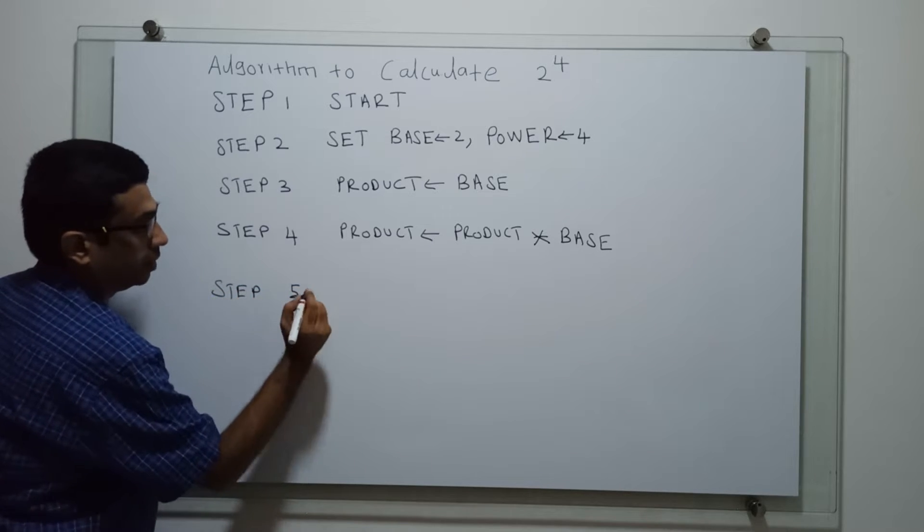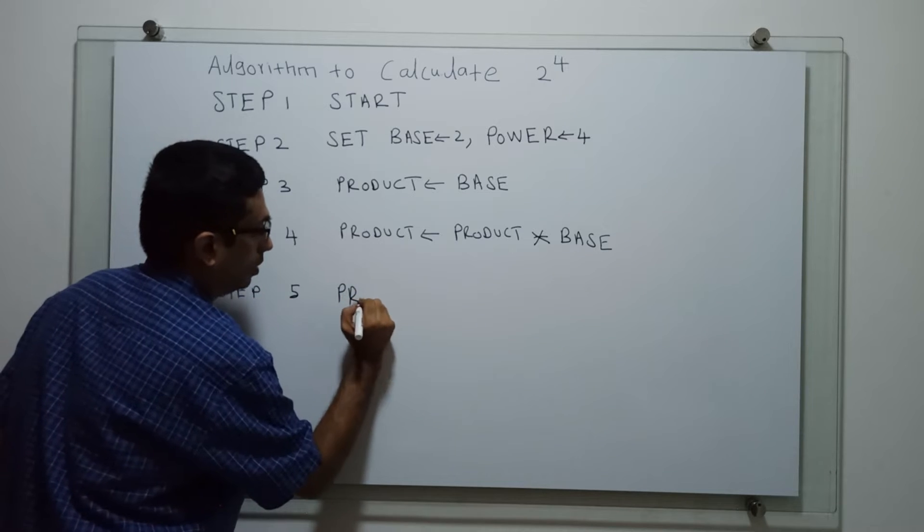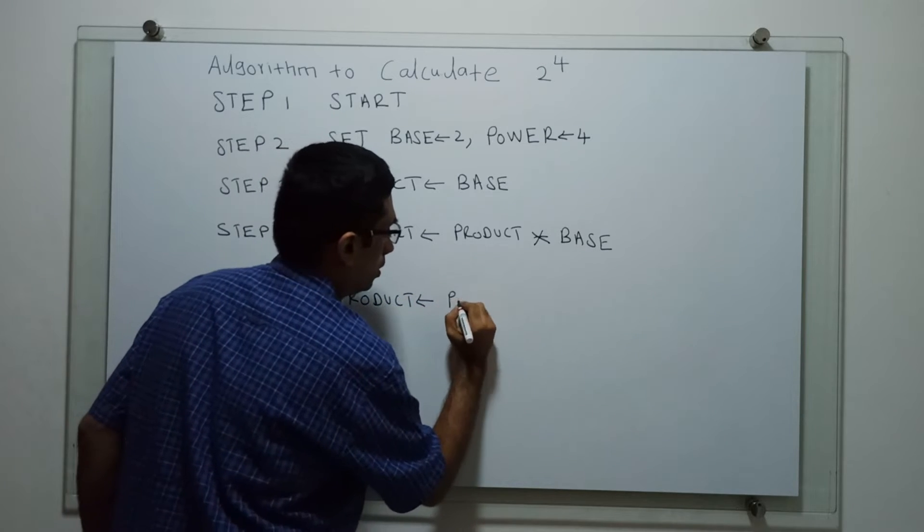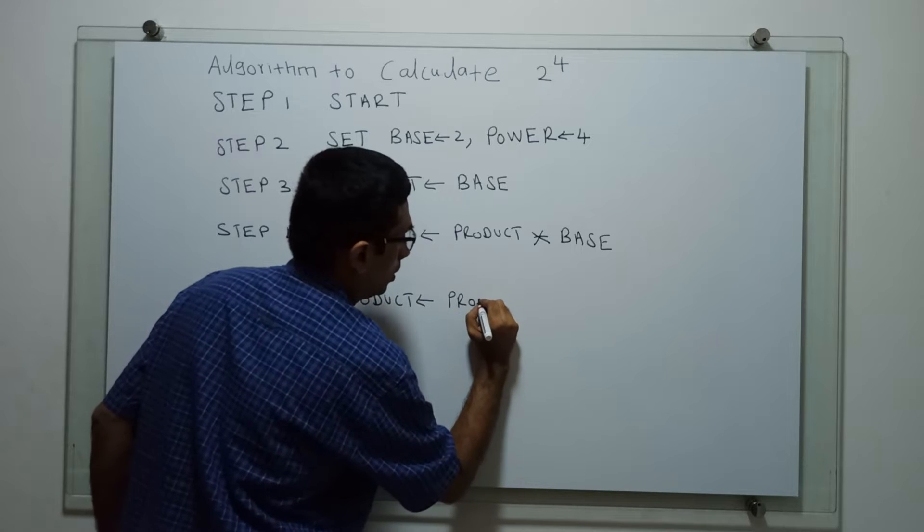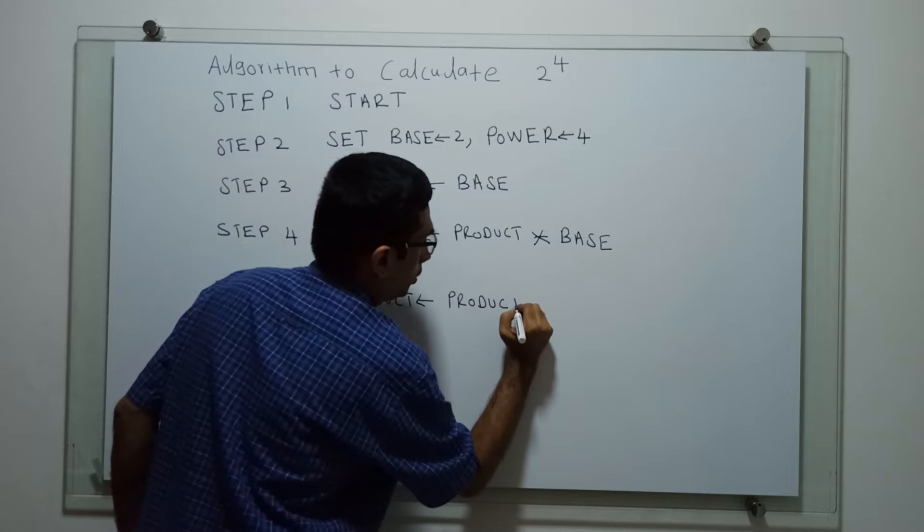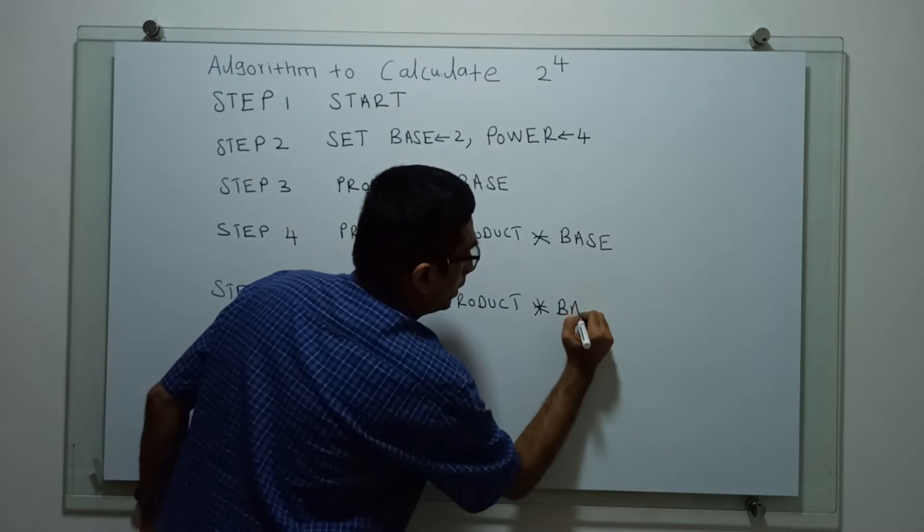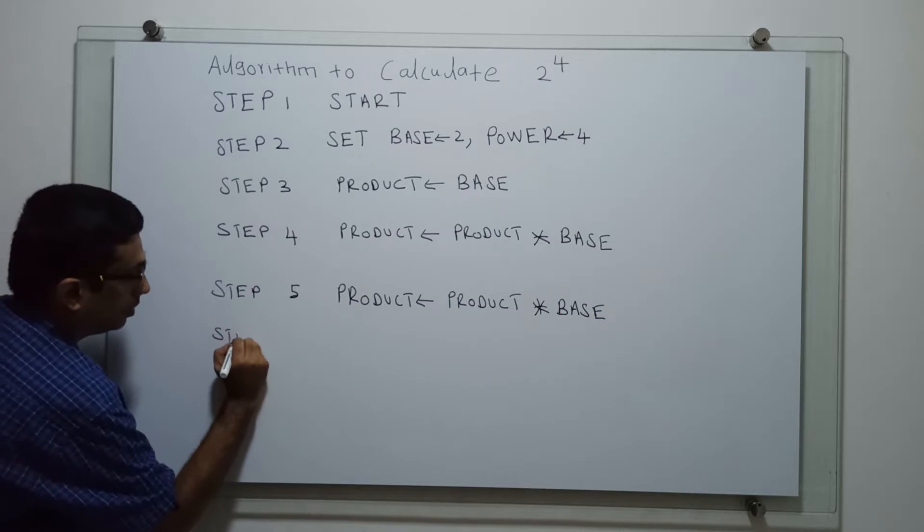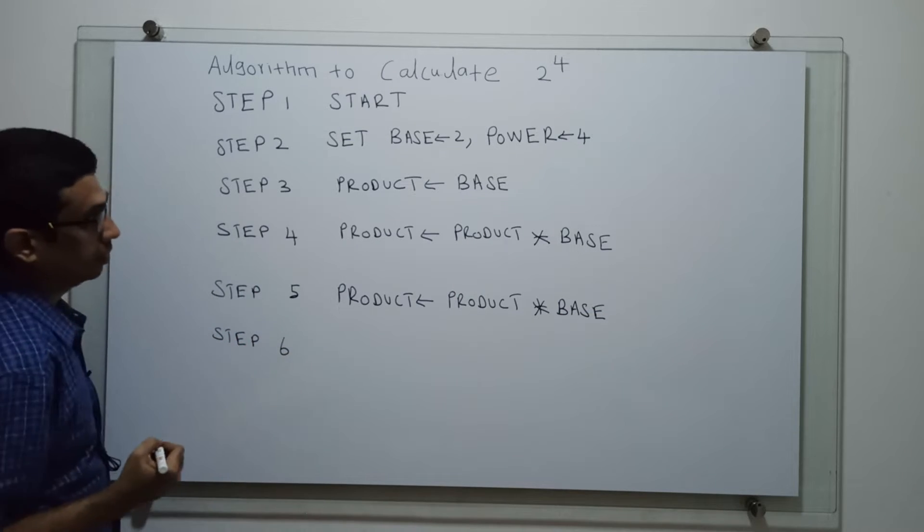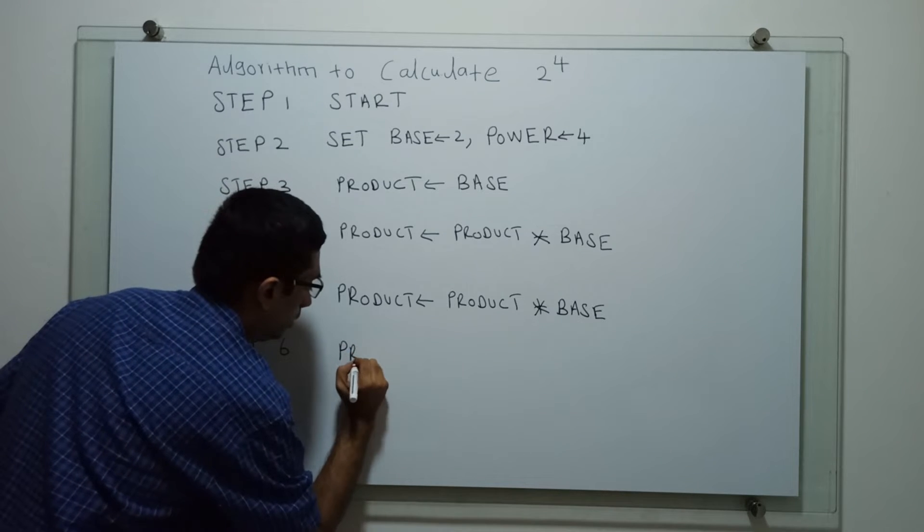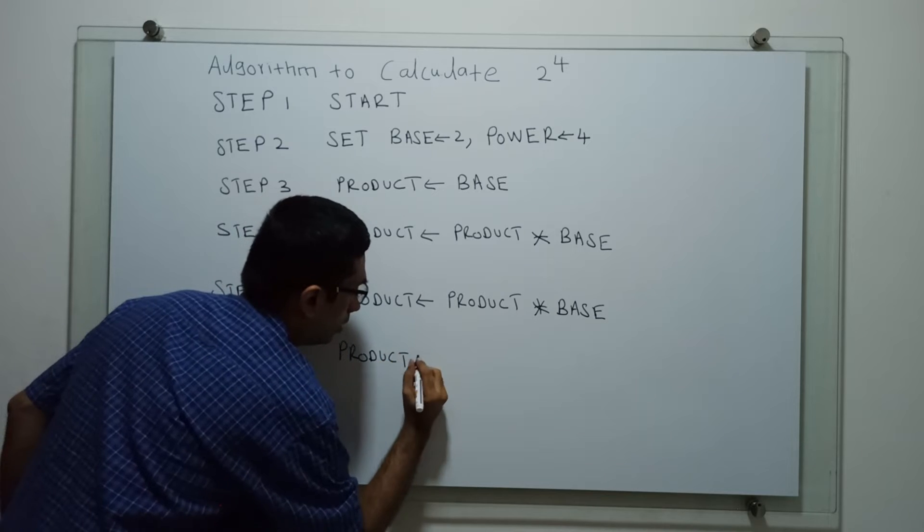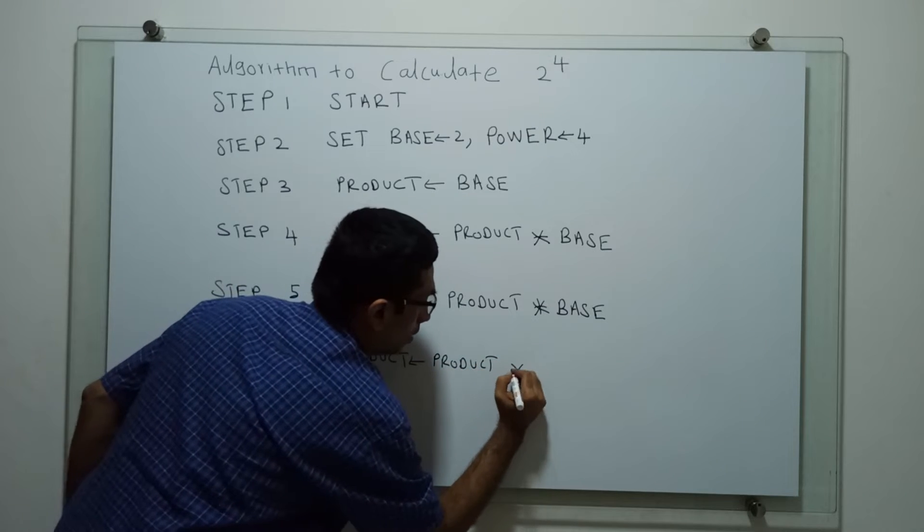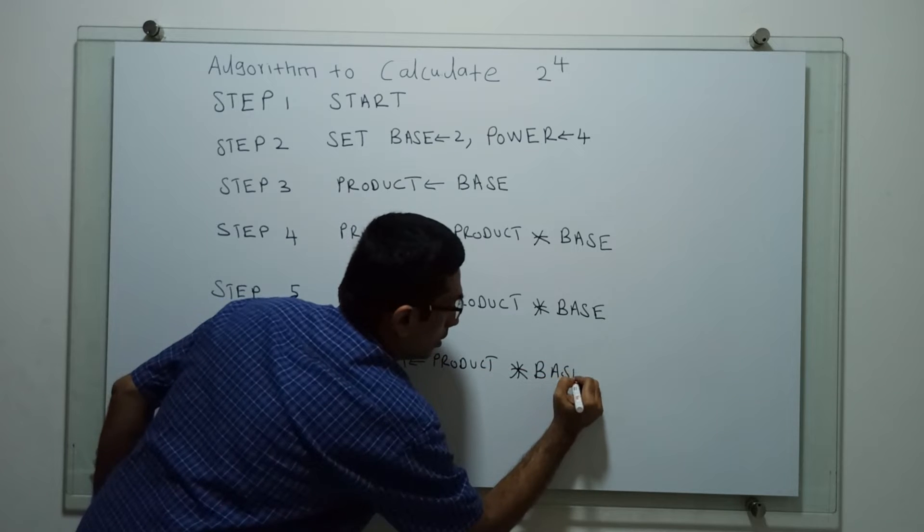Step 5, product equal to product multiplication of base. Step 6, product equal to product multiplication of base.